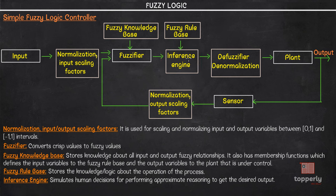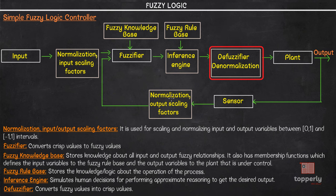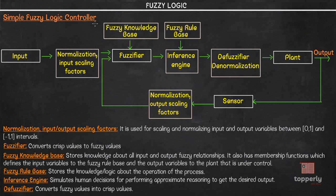Once we receive the fuzzy output, we defuzzify it with the help of a defuzzifier, which converts fuzzy values into crisp values. The output fuzzy values are converted into output crisp values through the plant, and we get the output. There is a feedback loop where the output is measured with the help of a sensor, normalized and scaled, and given back to the fuzzifier to obtain the desired response. Our fuzzy logic system is thus a closed loop control system.